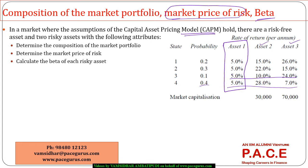Asset one is a risk-free asset because there is no change in its returns across any state. The overall market capitalization is 30,000 and 70,000 for the two risky assets. So the composition of the market portfolio is taken in proportion to market capitalization — 30% in asset two and 70% in asset three.